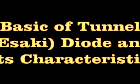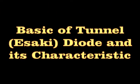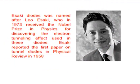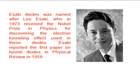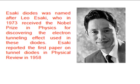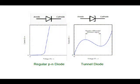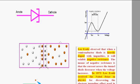Esaki Diodes was named after Leo Esaki, who in 1973 received the Nobel Prize in Physics for discovering the electron tunneling effect used in these diodes. Esaki reported the first paper on tunnel diodes in Physical Review in 1958. Today I am going to explain the principle and working of a tunnel diode.